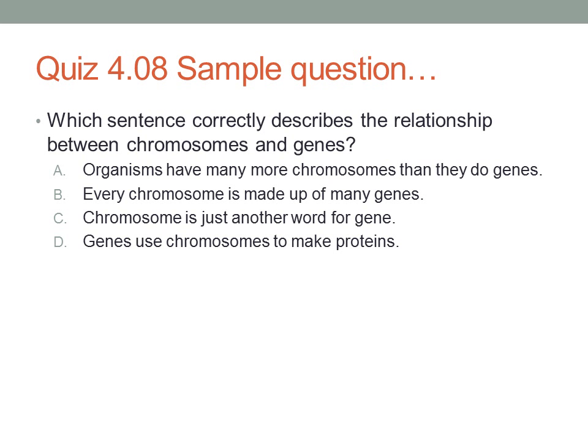So here's the first sample question. Which sentence correctly describes the relationship between chromosomes and genes? A. Organisms have many more chromosomes than they do genes. B. Every chromosome is made up of many genes. C. Chromosome is just another word for gene. Or D. Genes use chromosomes to make proteins.